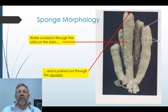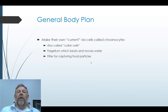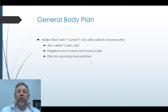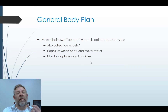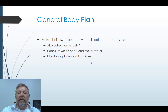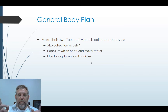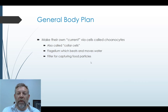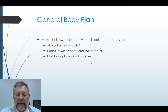Sponges can't really move much, so they just sit there and filter things out of the water. How do they get the water to flow through? They don't rely on existing currents — they make their own current. They have specialized cells called choanocytes, also called collar cells. These have a flagellum that beats and as it beats, it pulls water through, and it also has a little filter so small particles in the water get caught.